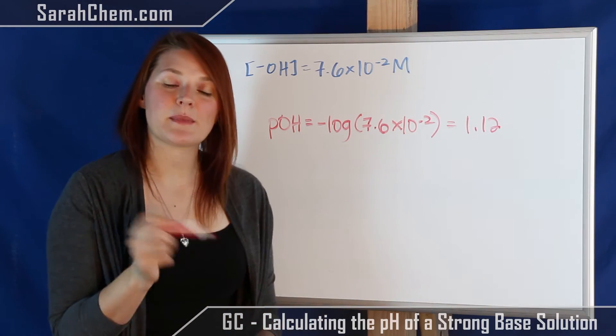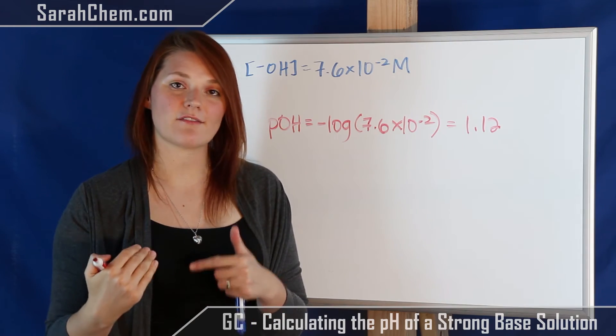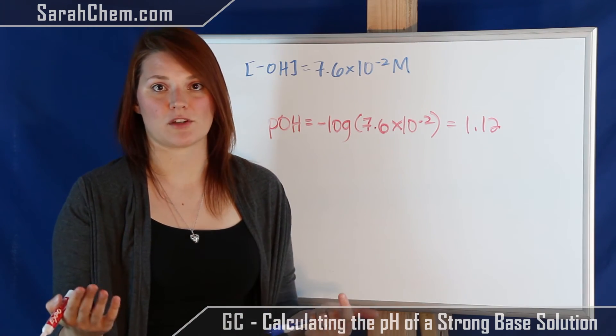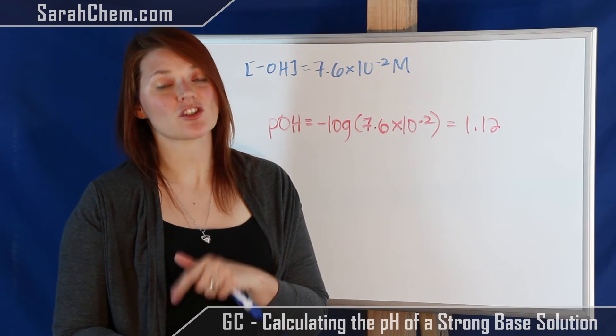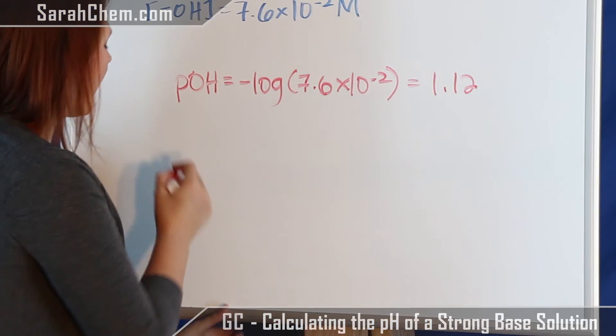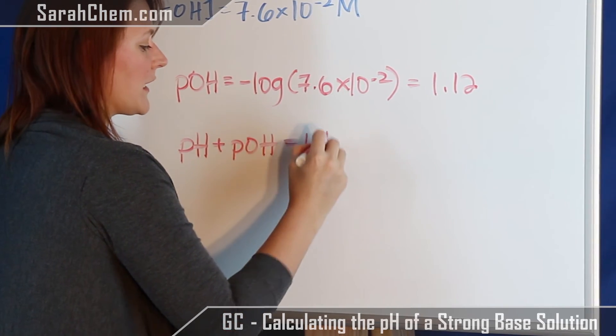Now remember, this makes sense relative to pOH because a pOH less than 7 means that we have a basic solution. But we need to remember that the question was asking about pH, not pOH. So what we have is that the pH plus the pOH is equal to 14.